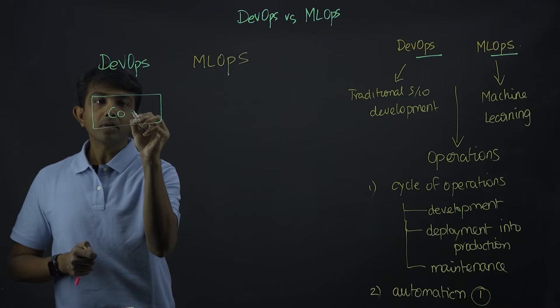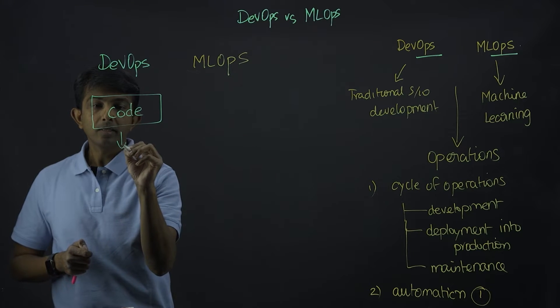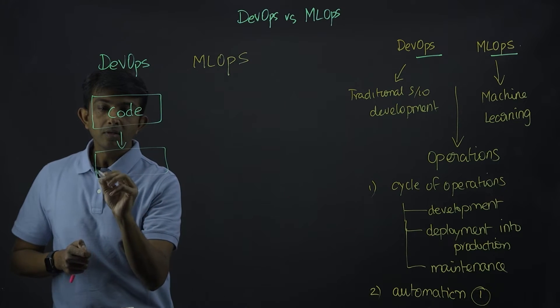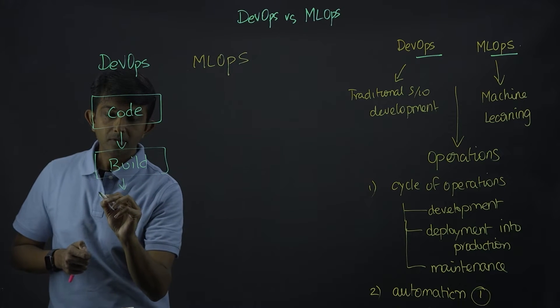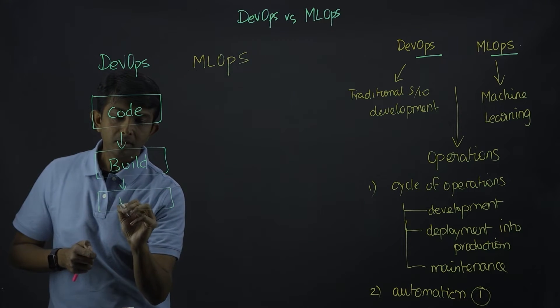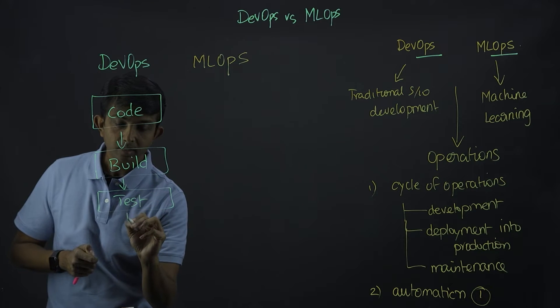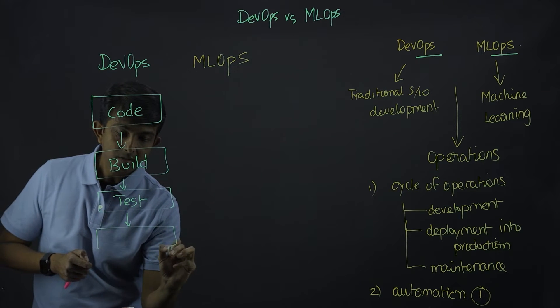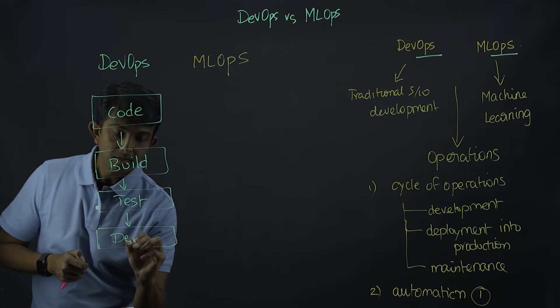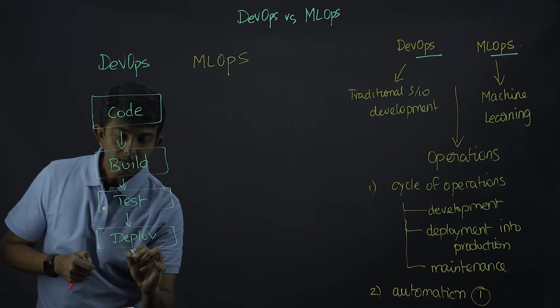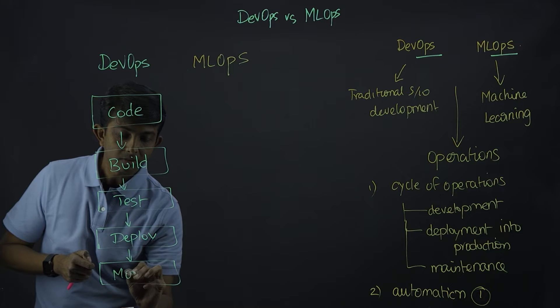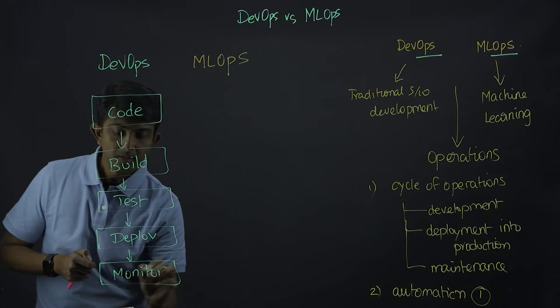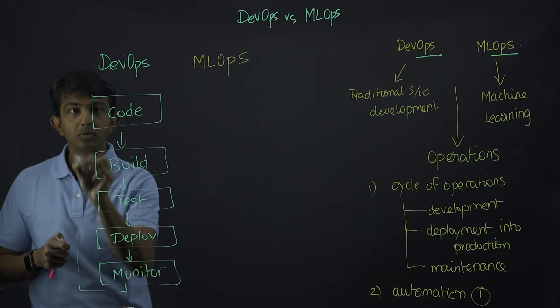With DevOps, start with coding, and then build, test, deploy, and monitor. And this goes in a loop.